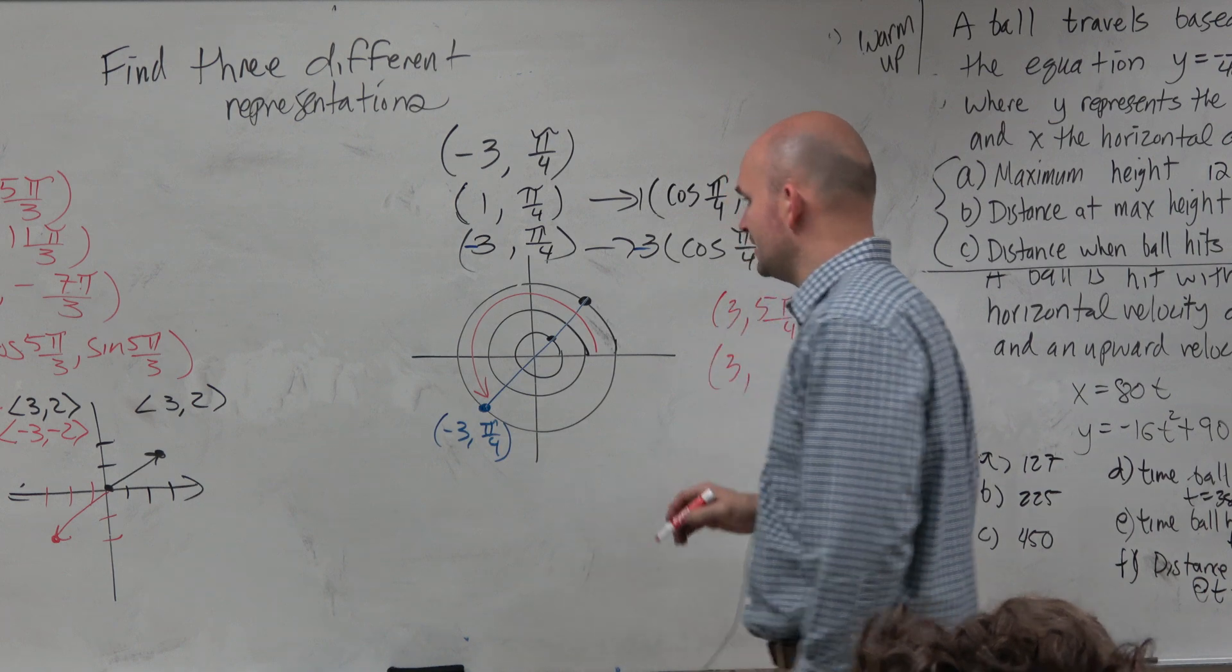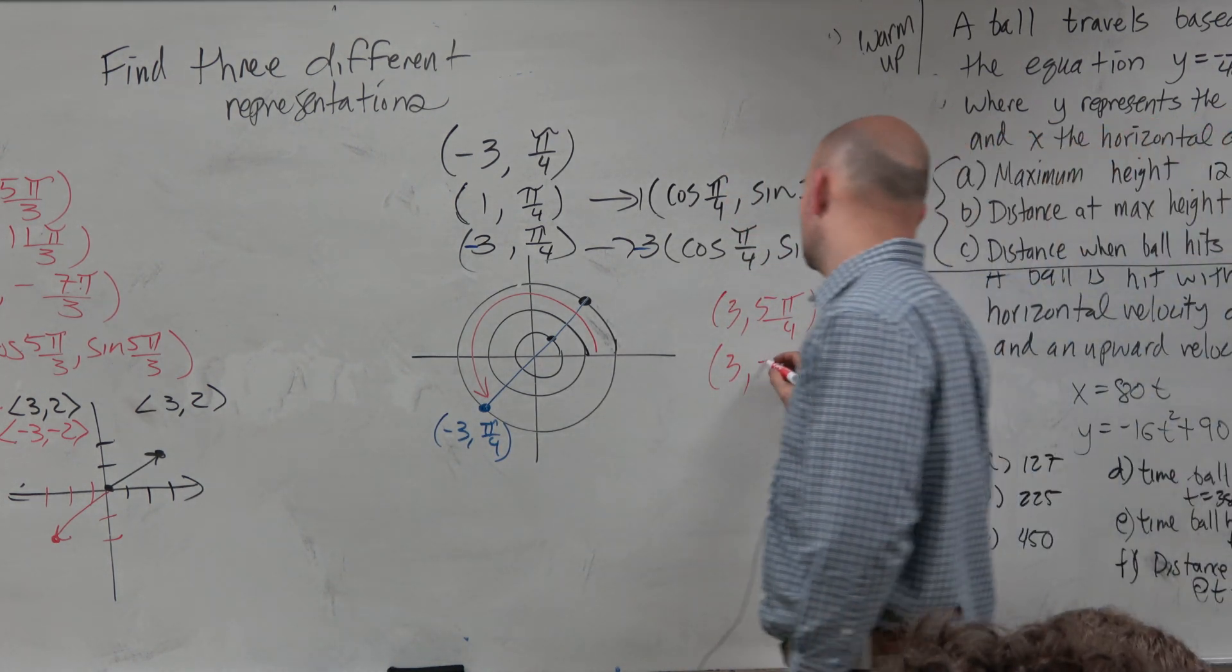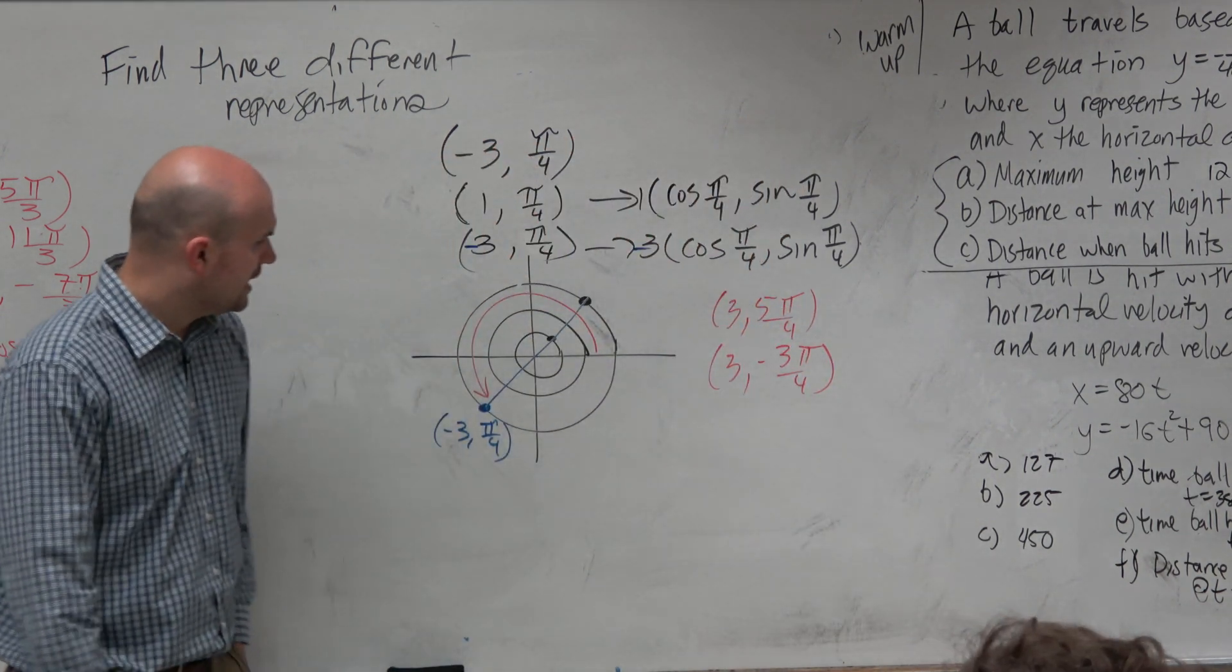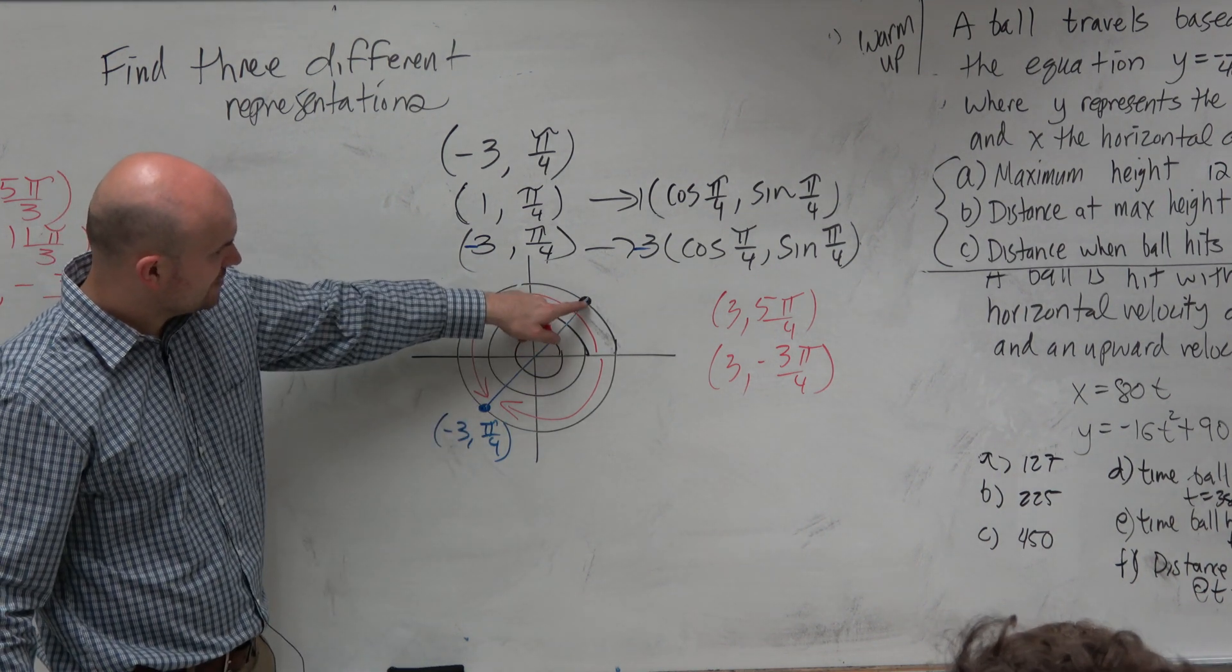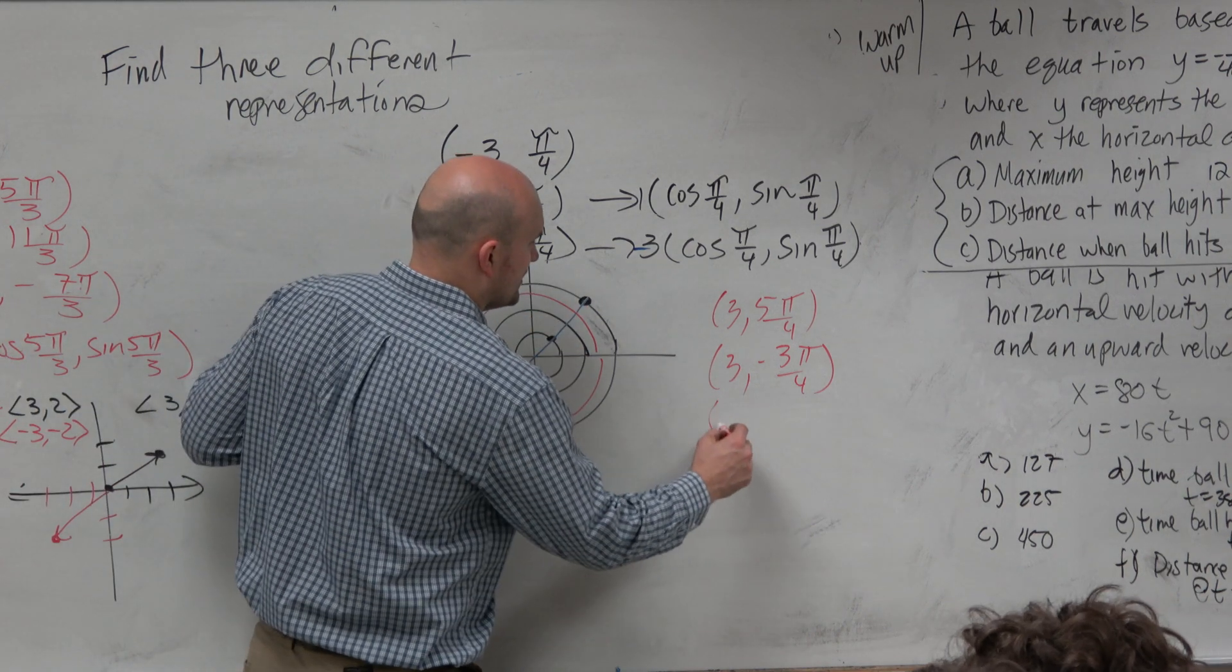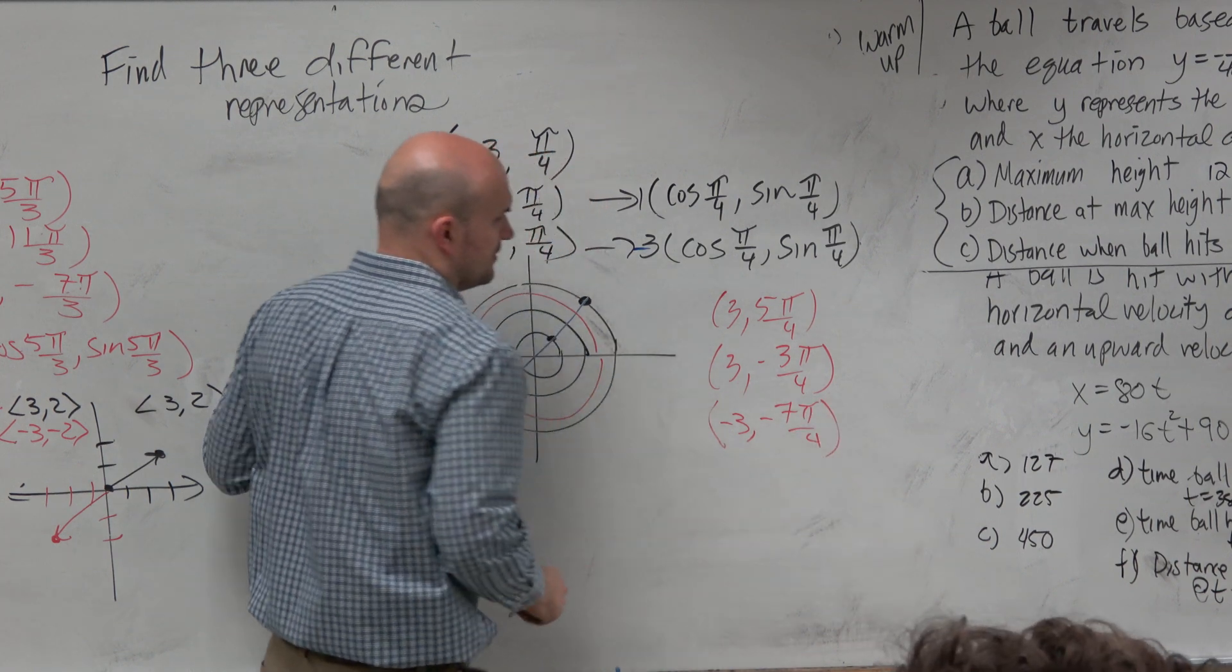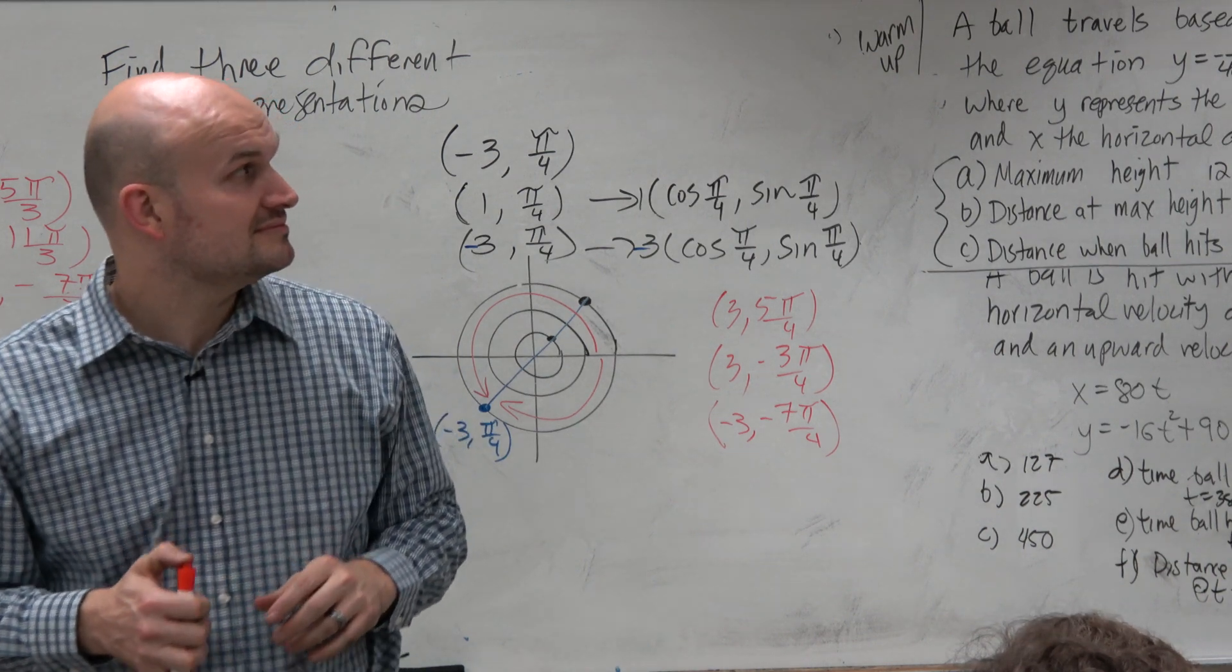Could we do positive 3 with a negative angle? Negative 3 π/4? That would be this one. Could we do another negative? Could I do this version but in the negative angle form? Yeah, so I could also do negative 3, negative 7 π/4. There's three representations for you as well.